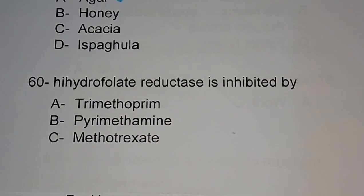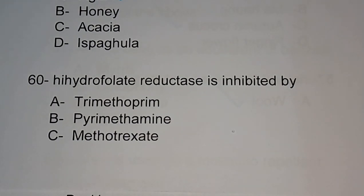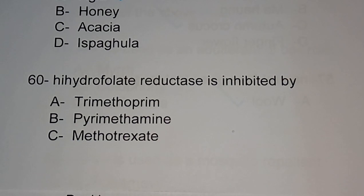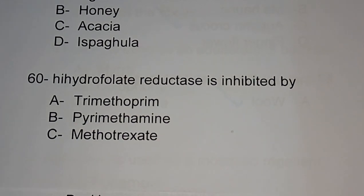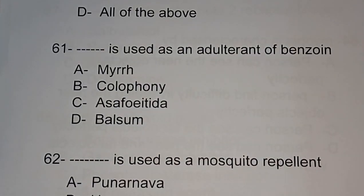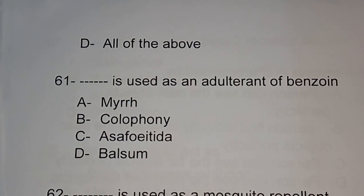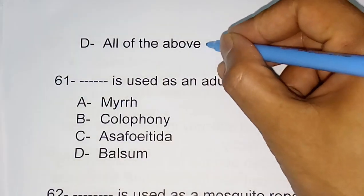Question number 60: dihydrofolate reductase is inhibited by — trimethoprim, pyrimethamine, methotrexate, or all of the above. The correct answer is all of the above — trimethoprim, pyrimethamine, and methotrexate all inhibit dihydrofolate reductase.